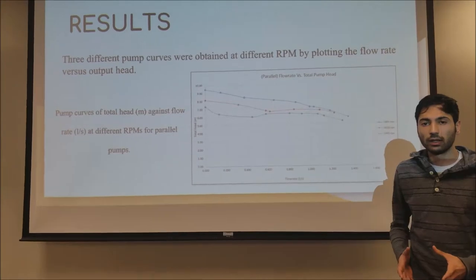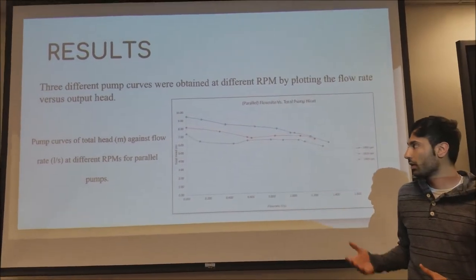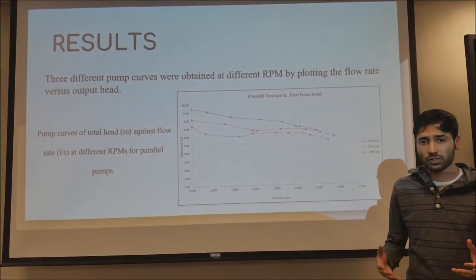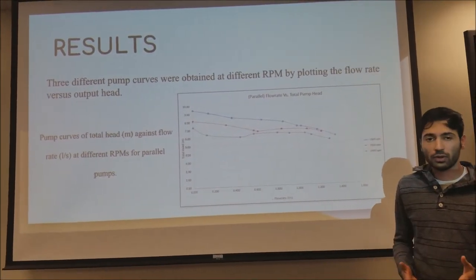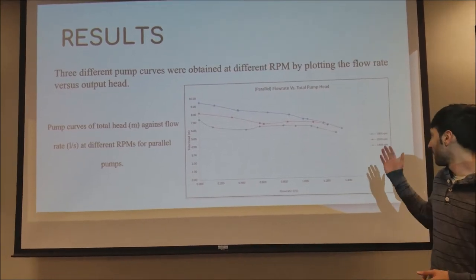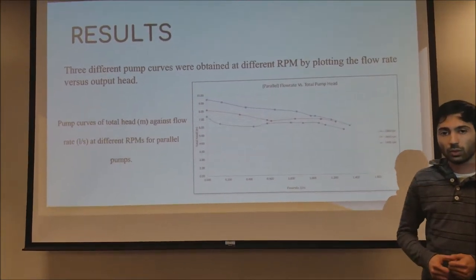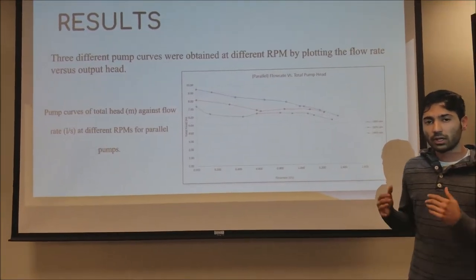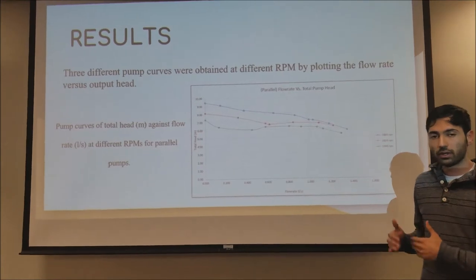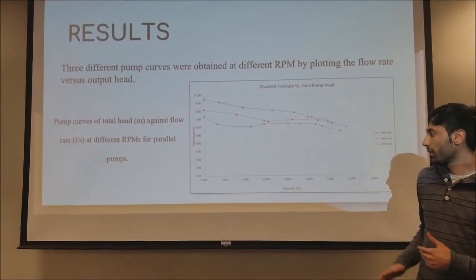Once we collected the data from our experiment, we plotted it onto a graph showing the characteristic curves for three different RPMs: 1800, 1620, and 1440. Once we collected that data for the parallel pumps, we graphed it onto this graph.